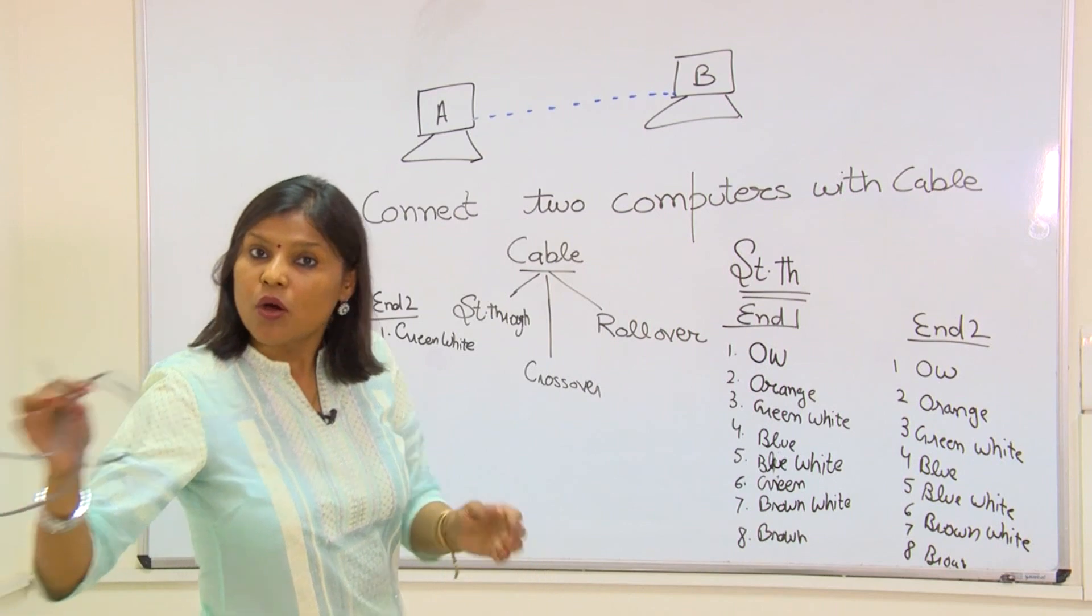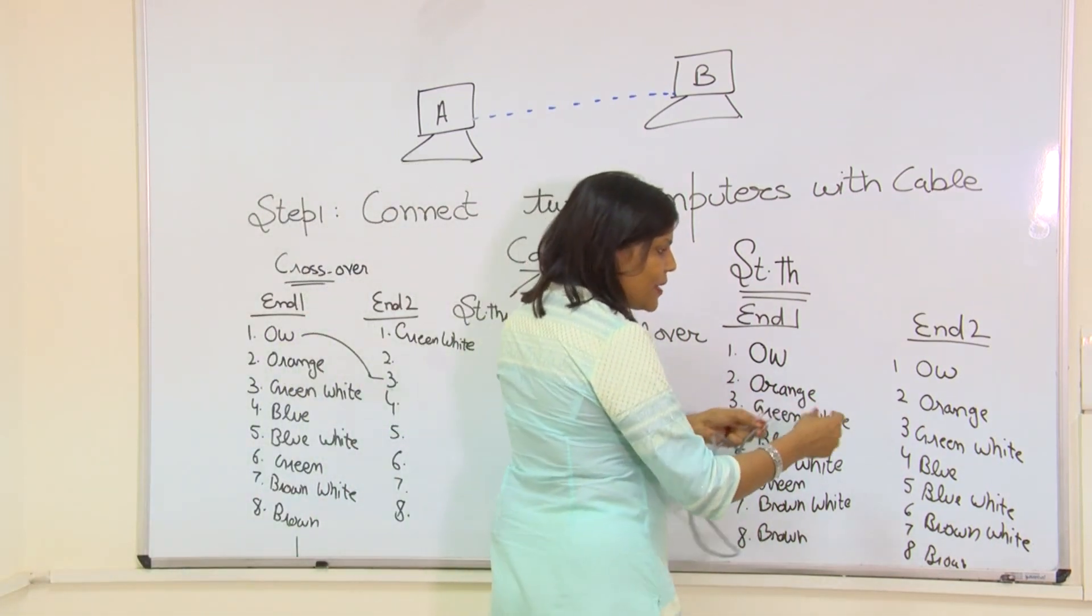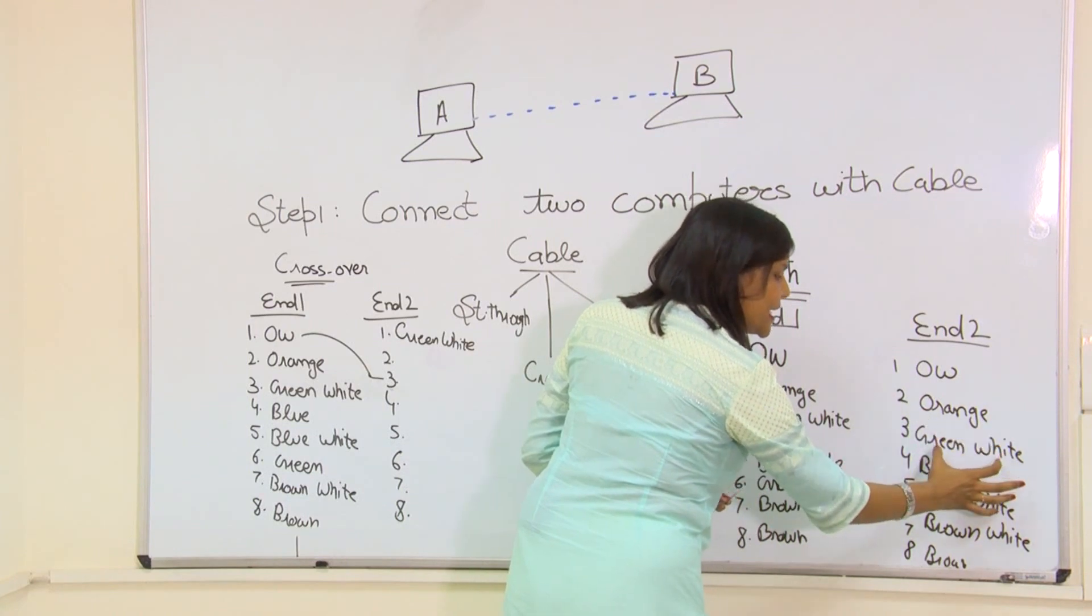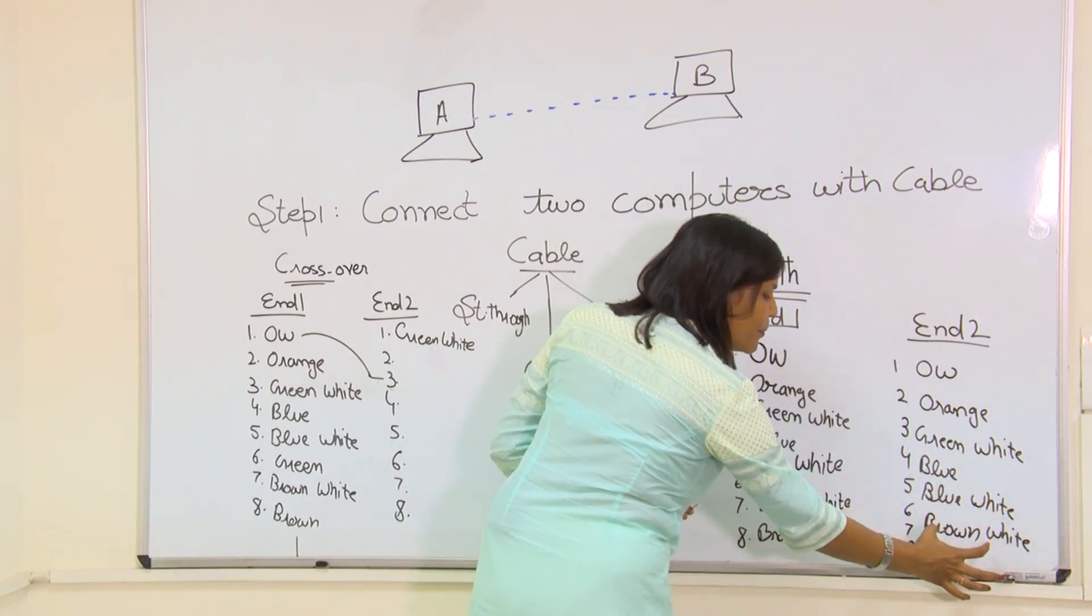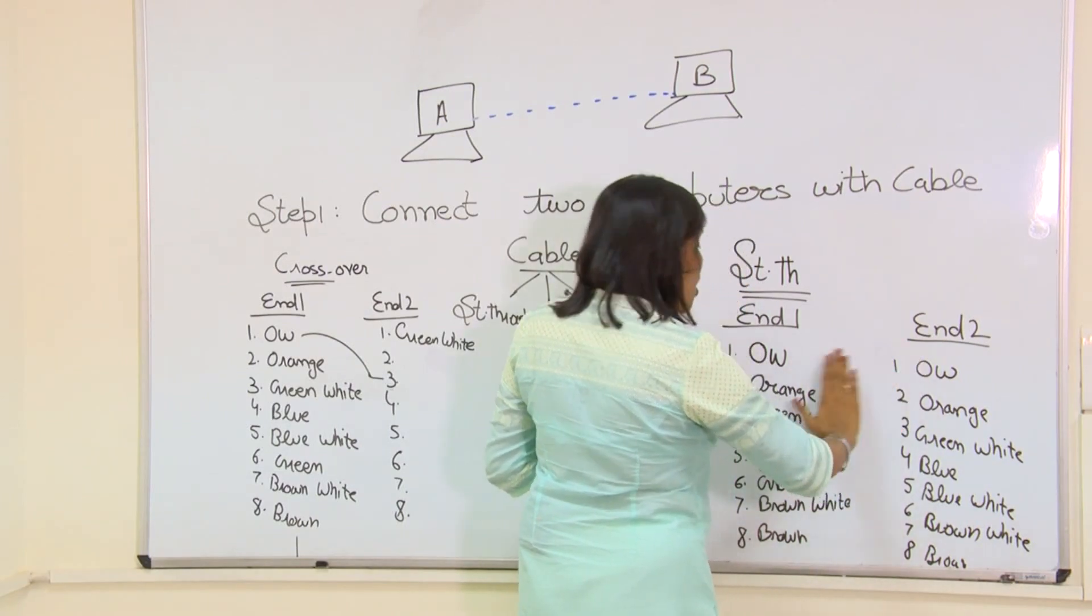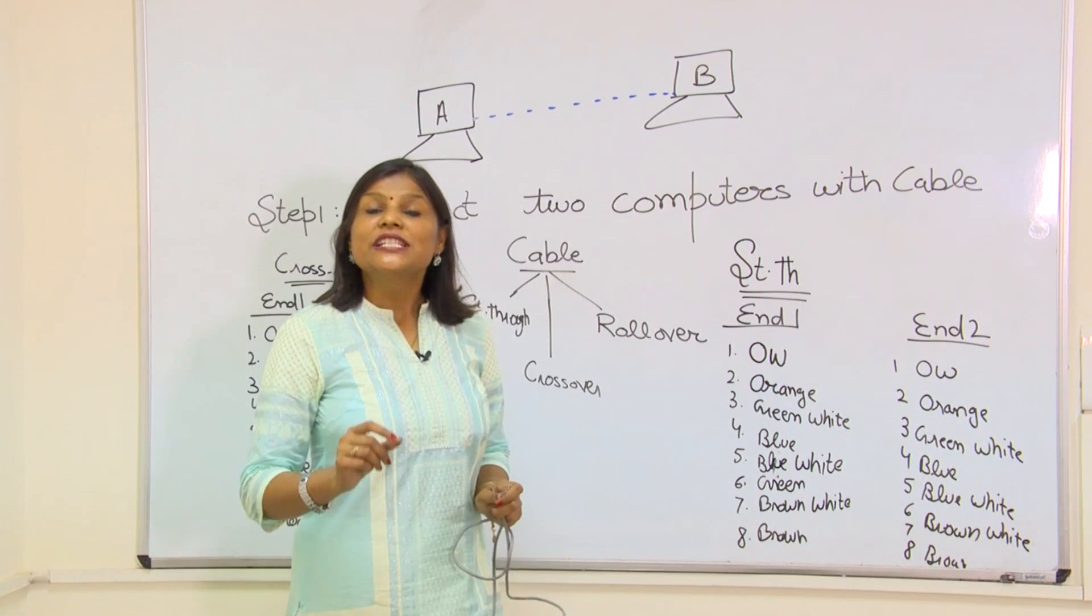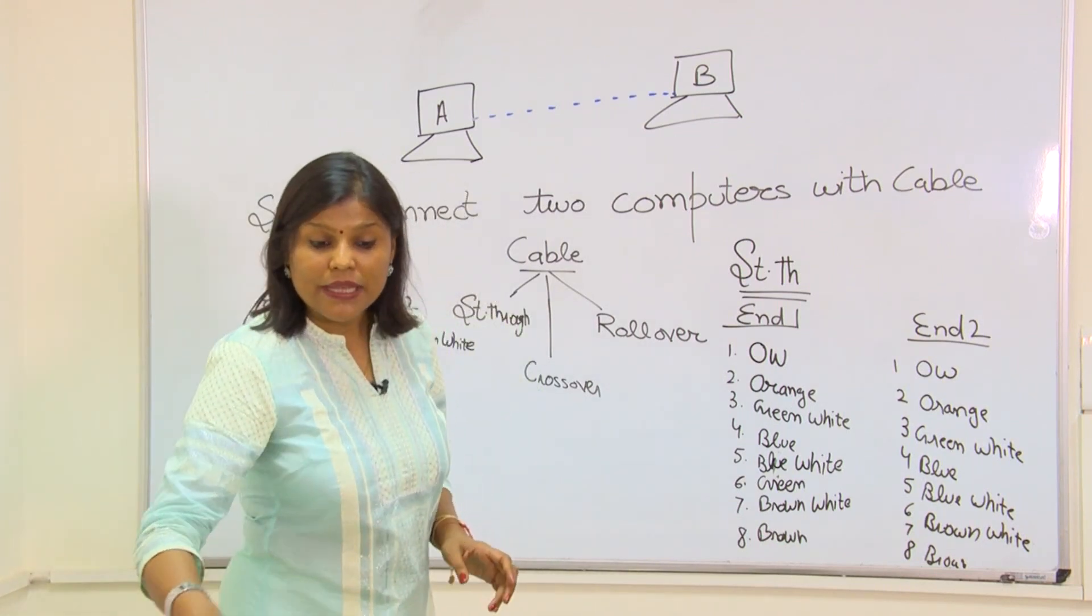On one end and on the second end similarly: orange white, orange, green white, blue, blue white, green, brown white, and then brown. If I am taking the same combination on both ends, then this is called straight through cable.